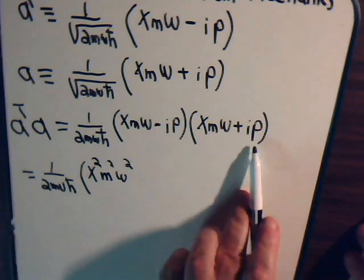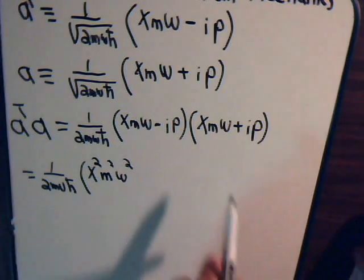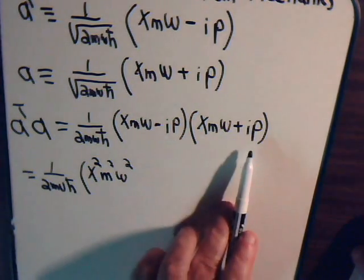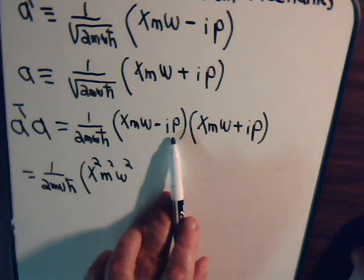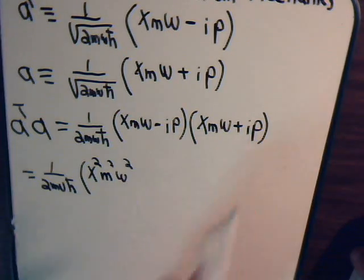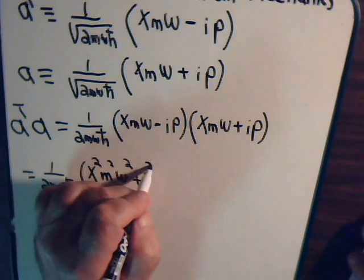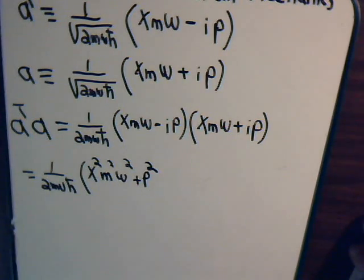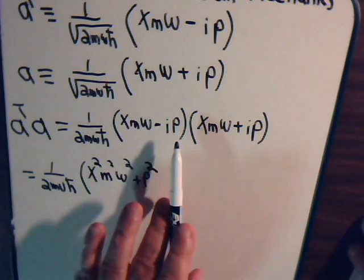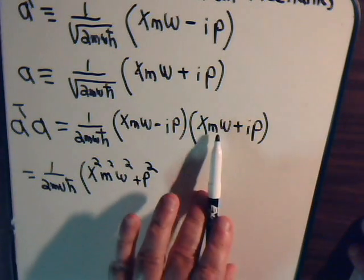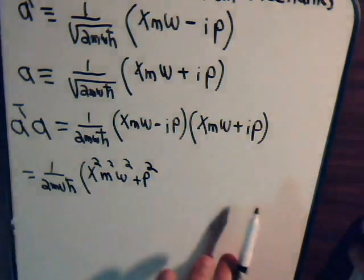And then, here we have this times this. So, that's p squared. Here, i squared is negative 1 times negative 1. That makes that plus p squared.